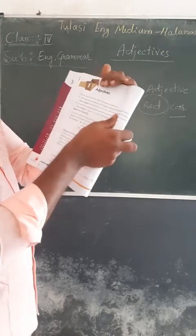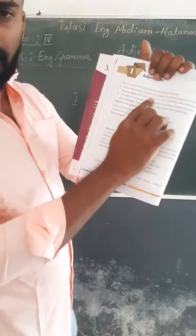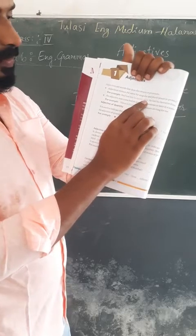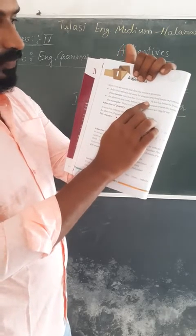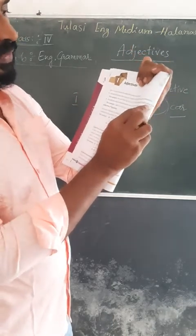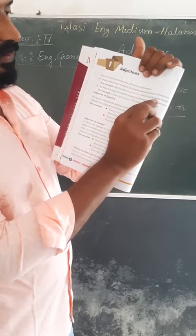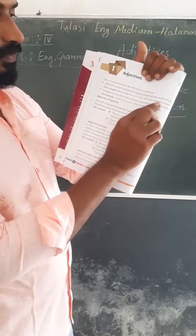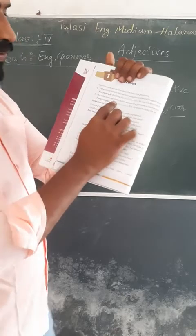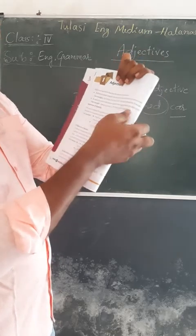Adjectives remain the same for singular and plural nouns. For example: 'He lost his favorite shirt' — shirt is singular, favorite is the adjective. 'He lost his favorite friends' — friends is plural, but the adjective 'favorite' stays the same. An adjective may come before a noun or pronoun, or later in the sentence.